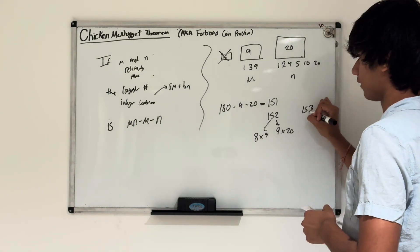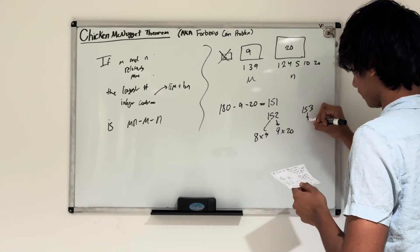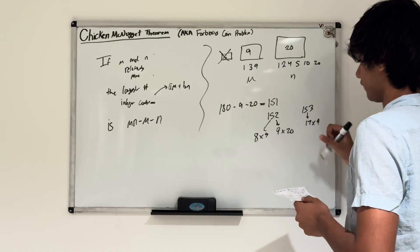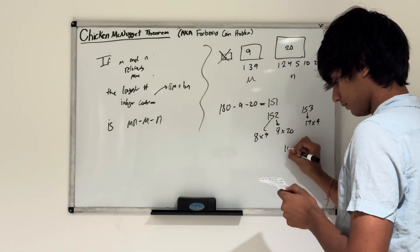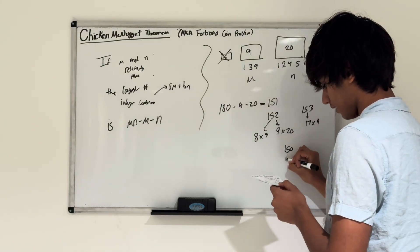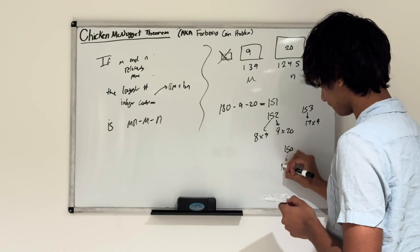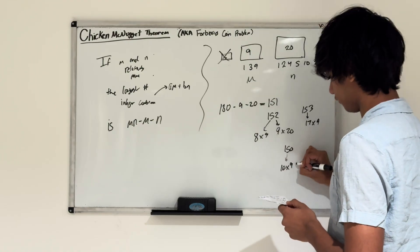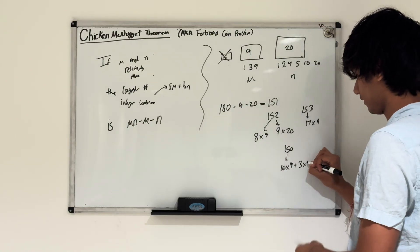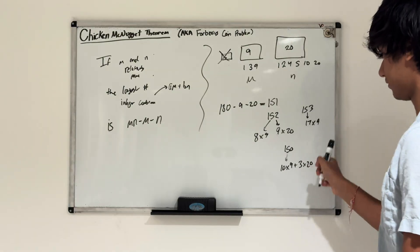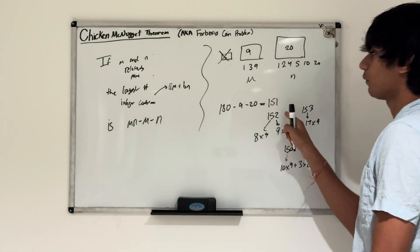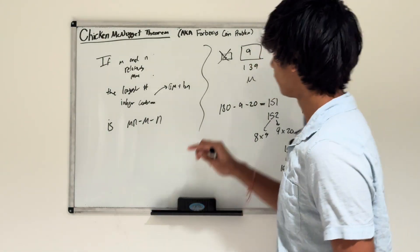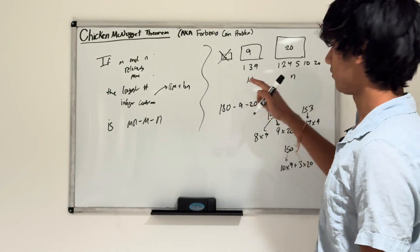153 is a factor of 9, so we could just do 17 boxes of 9 to get 153. For 150, we could do 10 boxes of 9, which is 90, and then 3 boxes of 20, which is 60. 90 plus 60 equals 150.